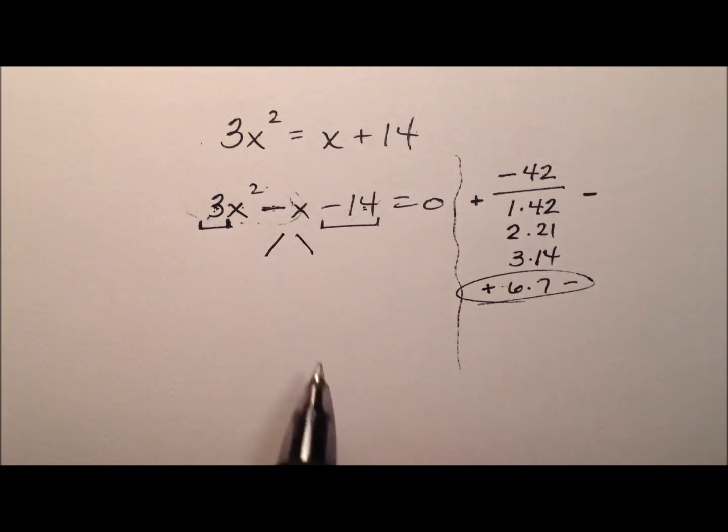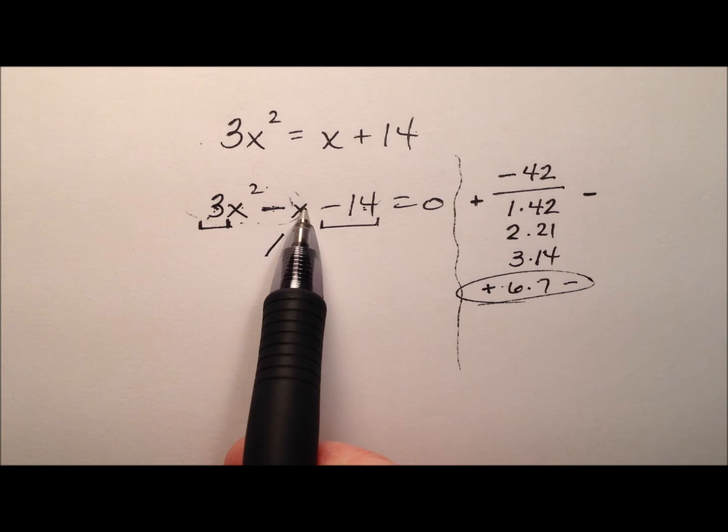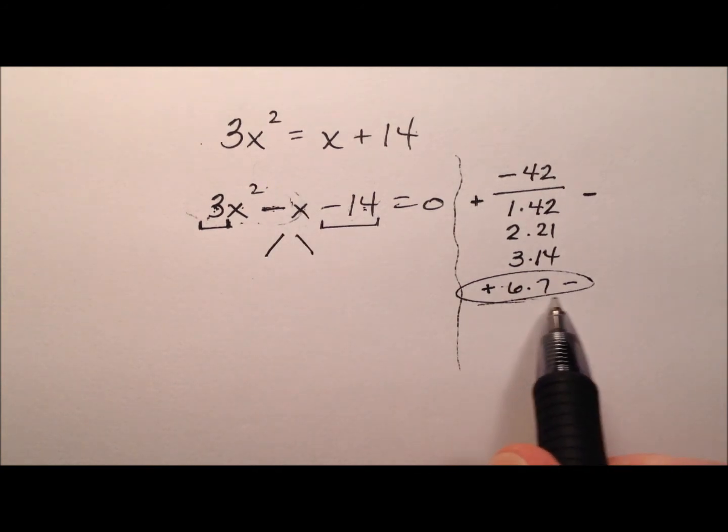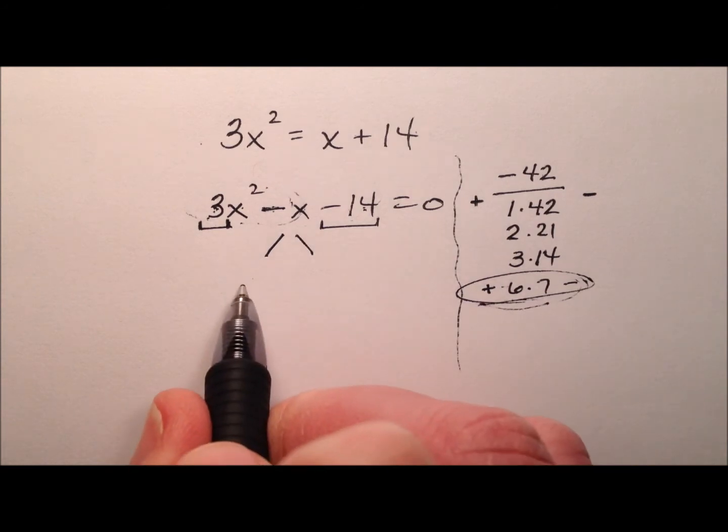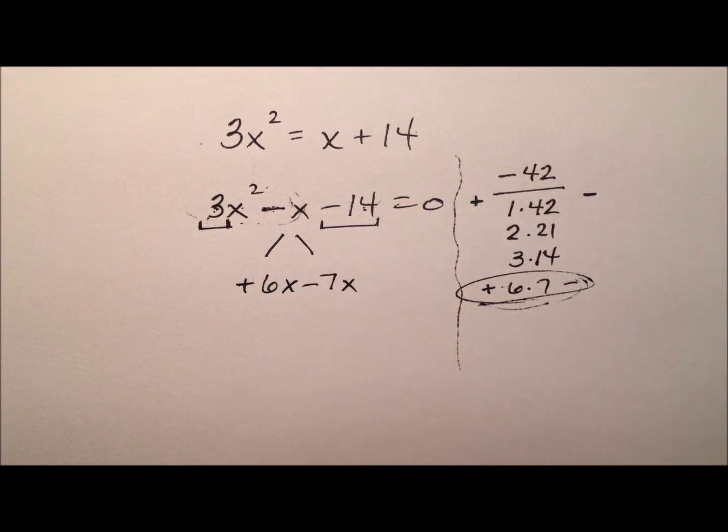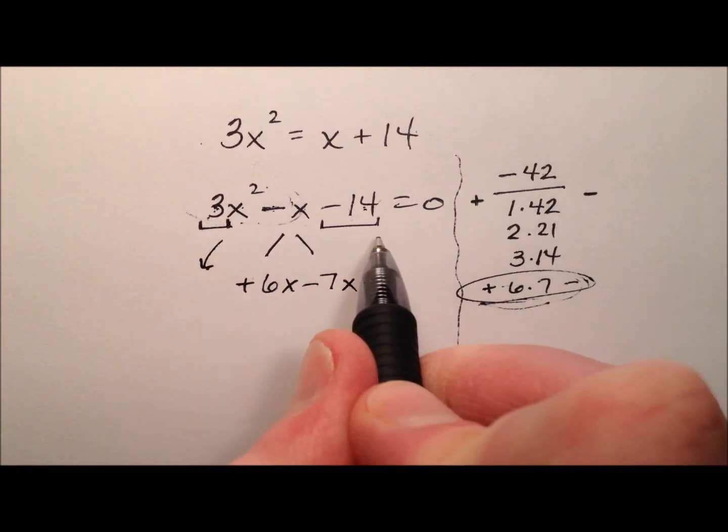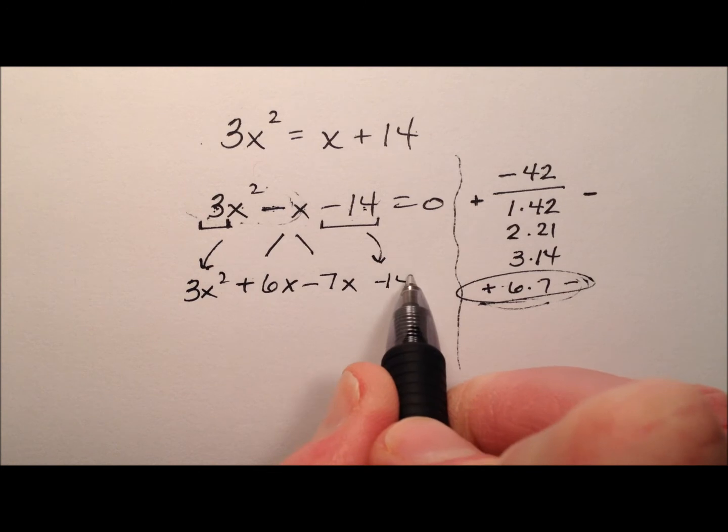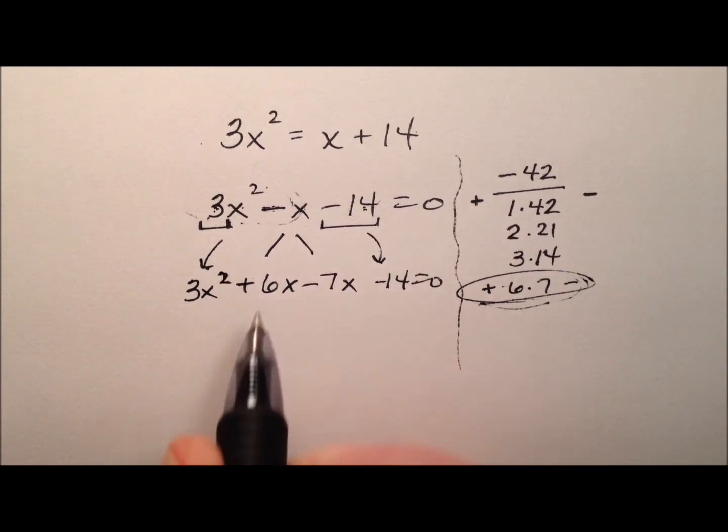So what I'm going to do is split this negative x into two like terms that add to make negative x and their coefficients will be right here, positive 6x and negative 7x. These other two terms, this quadratic term and this constant, will just come along for the ride.